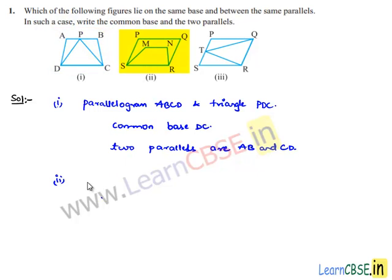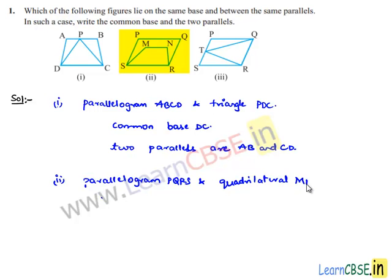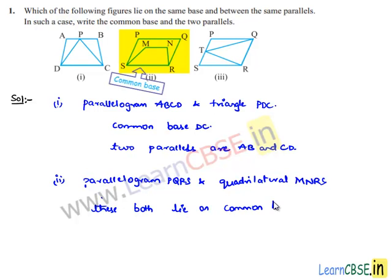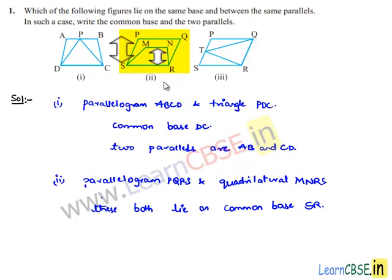Moving on to the second bit — we have two figures: parallelogram PQRS and quadrilateral MNRS. These both lie on the common base SR, but they do not lie between the common parallels.